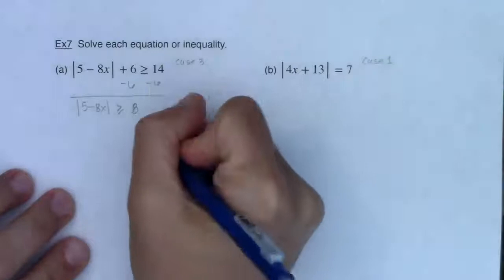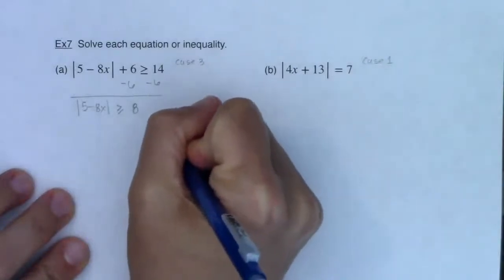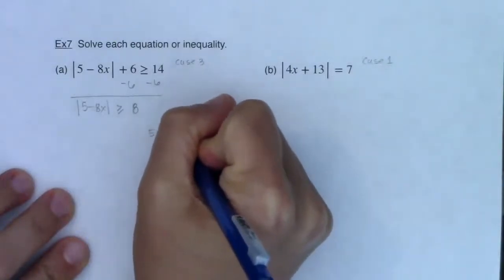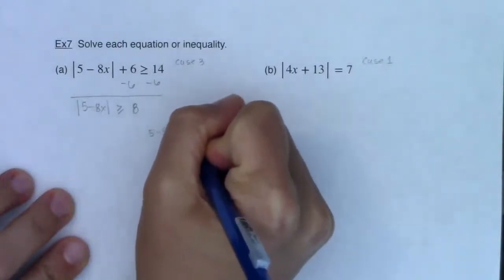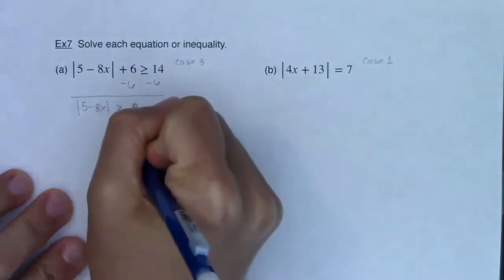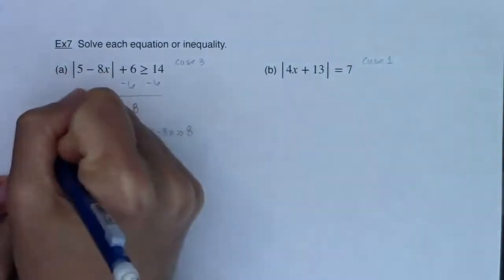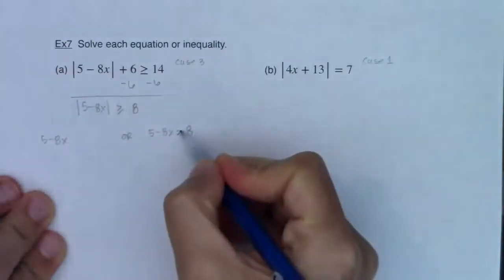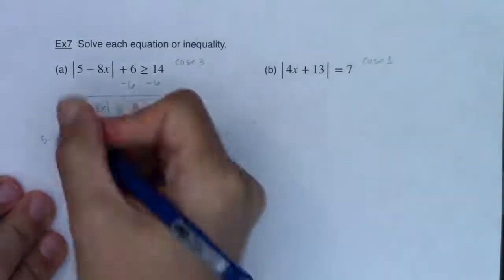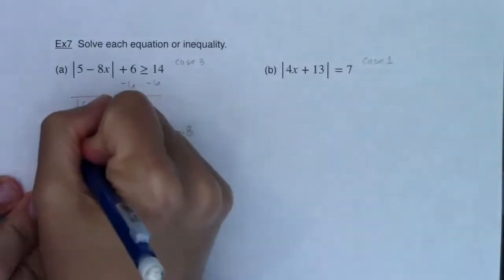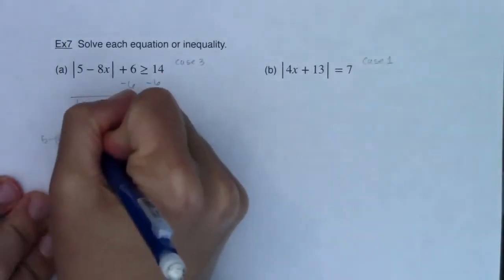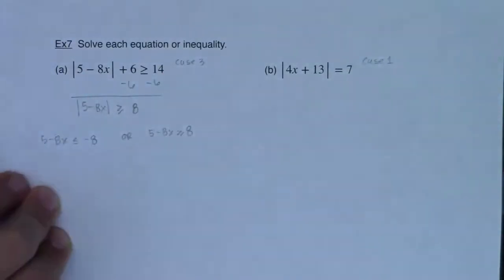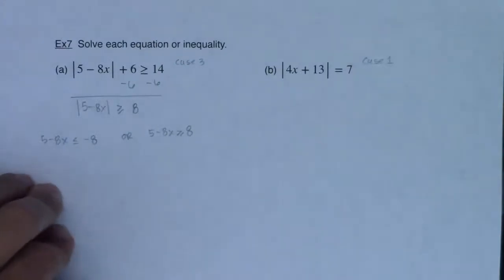So I'll set up: 5 minus 8x is greater than or equal to 8, or 5 minus 8x is less than negative 8. We change the direction of the inequality and change the sign on 8. Those are my two inequalities to solve.